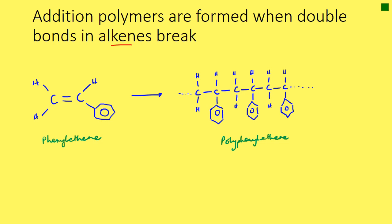Let's start off with a particular monomer — phenyl ethene. So we've got two carbons, it's an ethene, so we've got a double bond there. And it's phenyl ethene, so we have, as well as hydrogens, we have a benzene ring. That's our phenyl ethene. And as we've said, the double bond breaks and allows the monomers to join together.